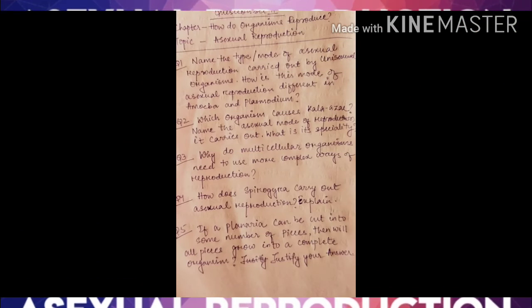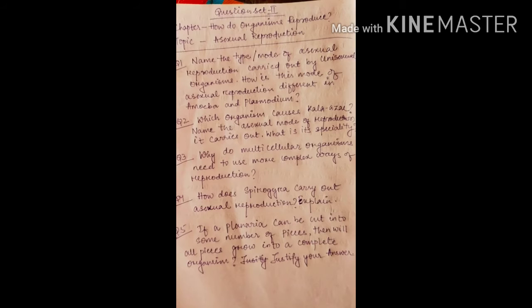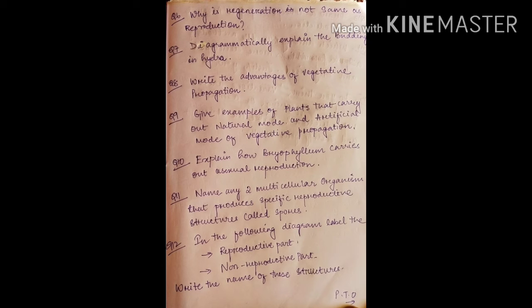This is the first page of the question paper. The sample set consists of five questions — all are conceptual type, not complex. All of them need to be practiced. All of them are based on the asexual reproduction part of 'How Do Organisms Reproduce.' I hope this will be very much beneficial for all of you.